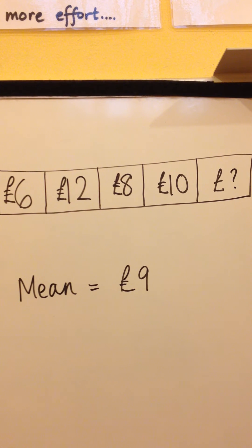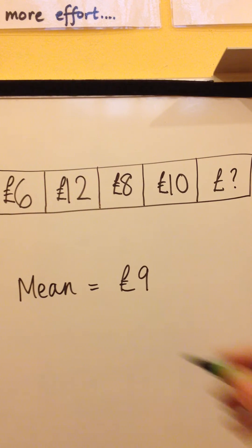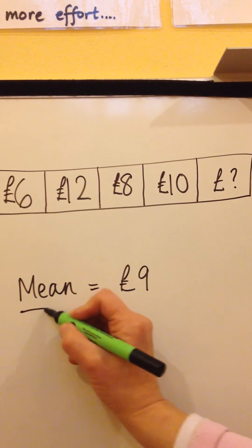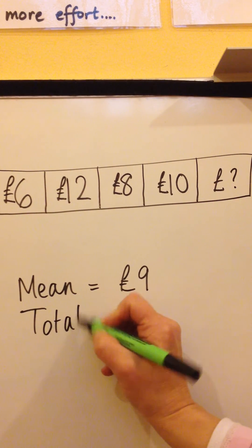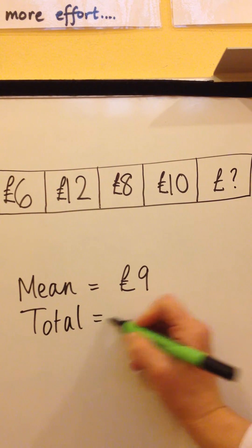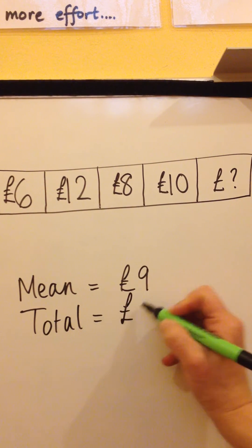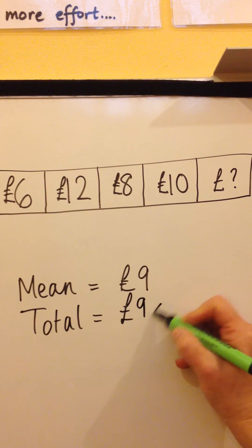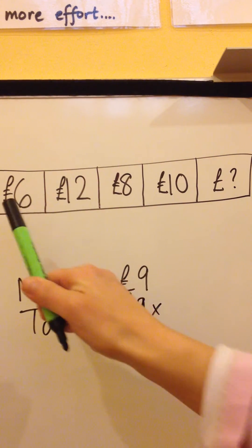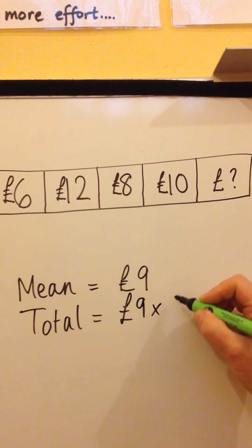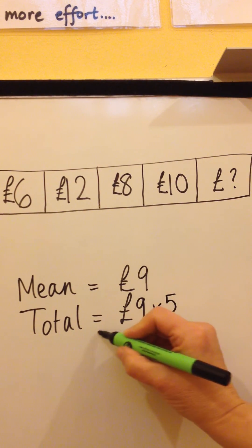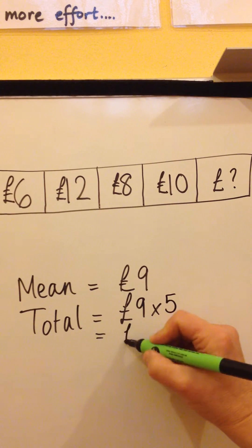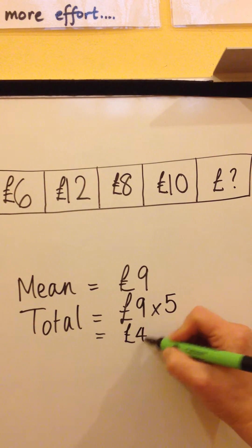To calculate the missing amount, we use the mean to work out the total amount of money that was raised. That would be £9 multiplied by the number of days, which would be 5, giving us £45.